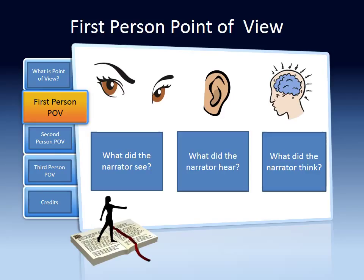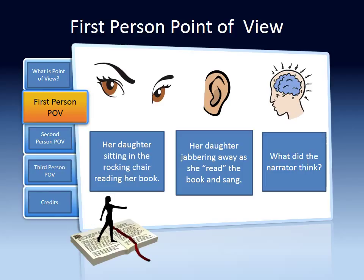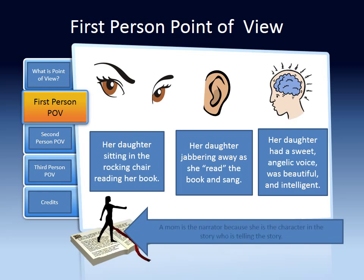Now we can think about what the narrator was able to see. The narrator saw her daughter sitting in the rocking chair reading her book. What did the narrator hear? The narrator heard her daughter jabbering away as she read the book and sang. What did the narrator think? The narrator thought that her daughter had a sweet angelic voice, was beautiful, and intelligent. A mom is the narrator because she is the character in the story who was telling the story.